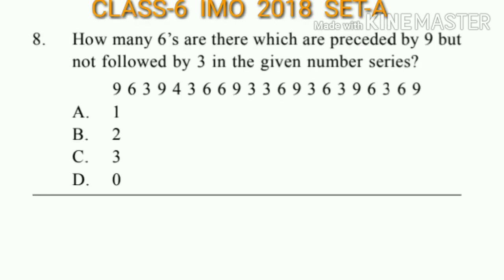Question number 8: How many sixes are there which are preceded by nine but not followed by three in the given number series? Looking at the number series, there are no sixes preceded by nine but not followed by three. So the answer will be option D.